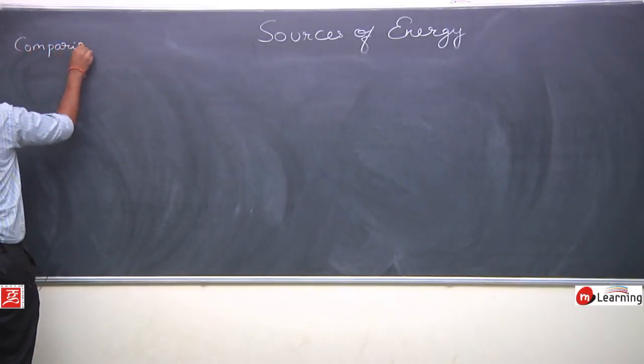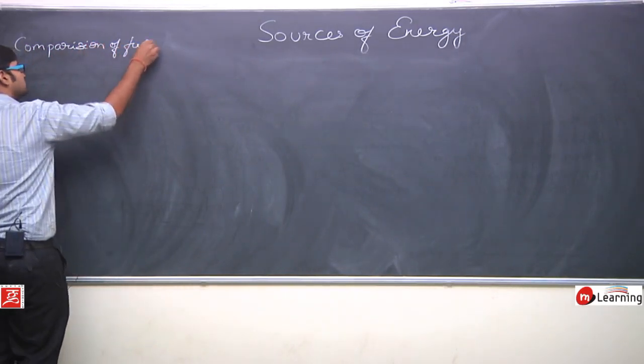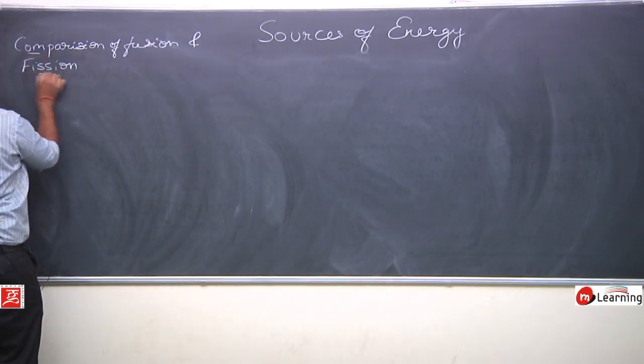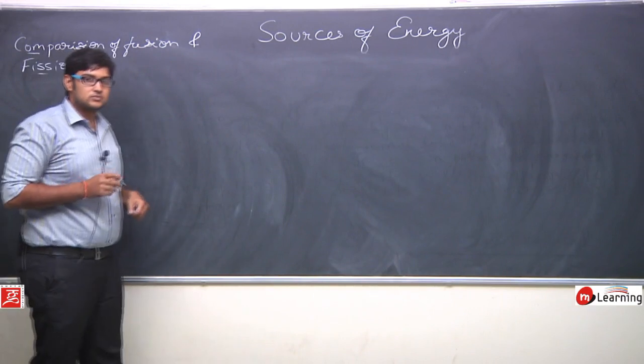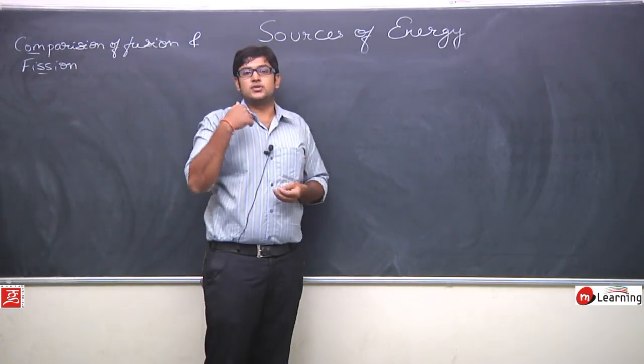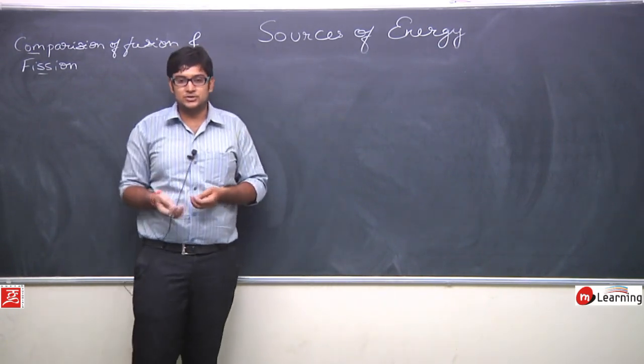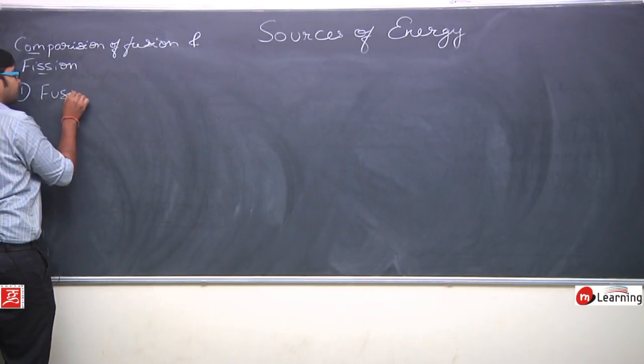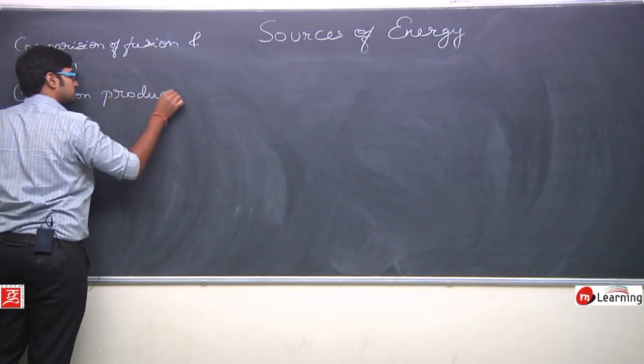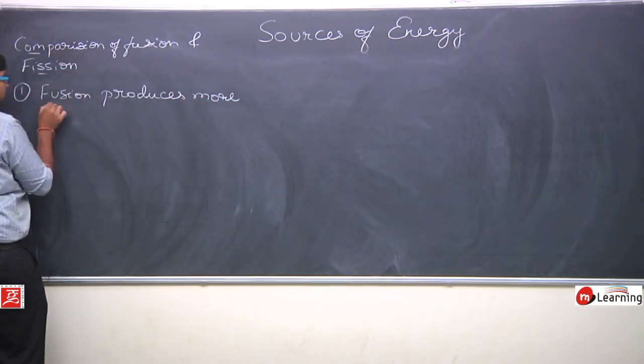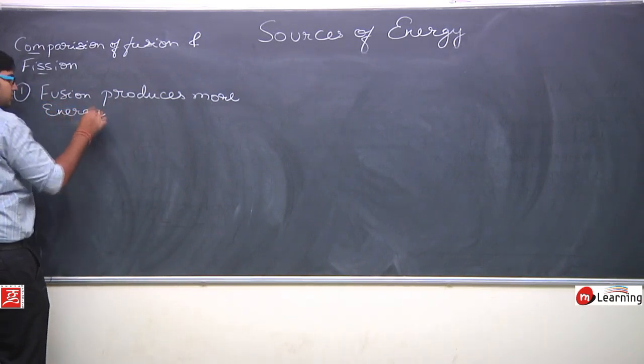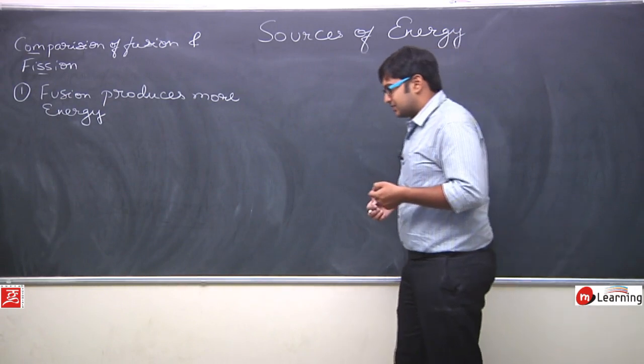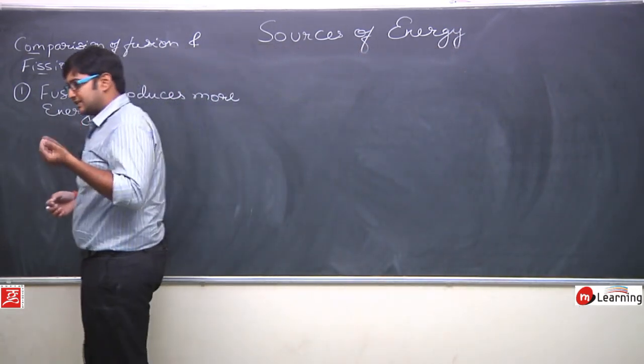Why we try to use the fusion process more compared to the fission process? Sabse pehla difference yehi hai, sabse pehla reason yehi hai ki fusion produces more energy. Fusion mein energy zyada nikalti hai. Hum ne dekha hydrogen do deuterium react karte hain.